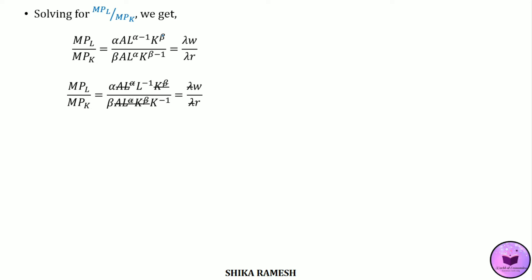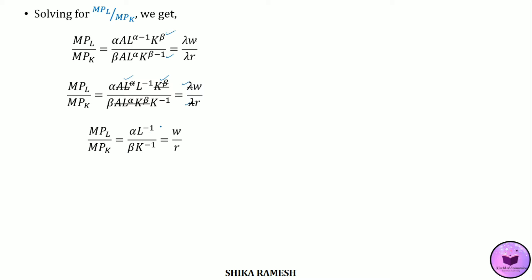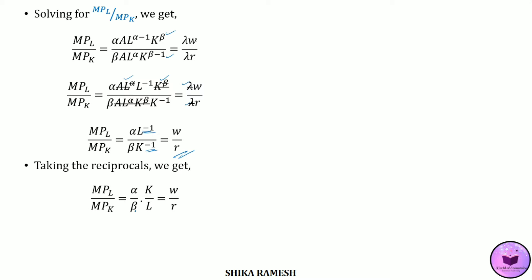Now solving for MPL/MPK, we substitute the terms just found. We get MPL/MPK = [α·A·L^(α-1)·K^β] / [β·A·L^α·K^(β-1)] = λw / λr. The terms A·L^α·K^β and λ are common and cancel out. So we get MPL/MPK = [α·L^(-1)] / [β·K^(-1)] = w/r. Taking reciprocals of the negative exponents, this simplifies to: (α/β)·(K/L) = w/r.